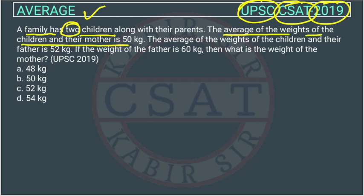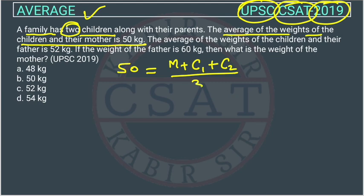The average weight of the children and their mother is 50 kg. From the formula, average is equal to the weight of mother (m) plus the weight of the two children (C1 and C2) divided by 3. So it will become: m + C1 + C2 = 50 × 3 = 150.